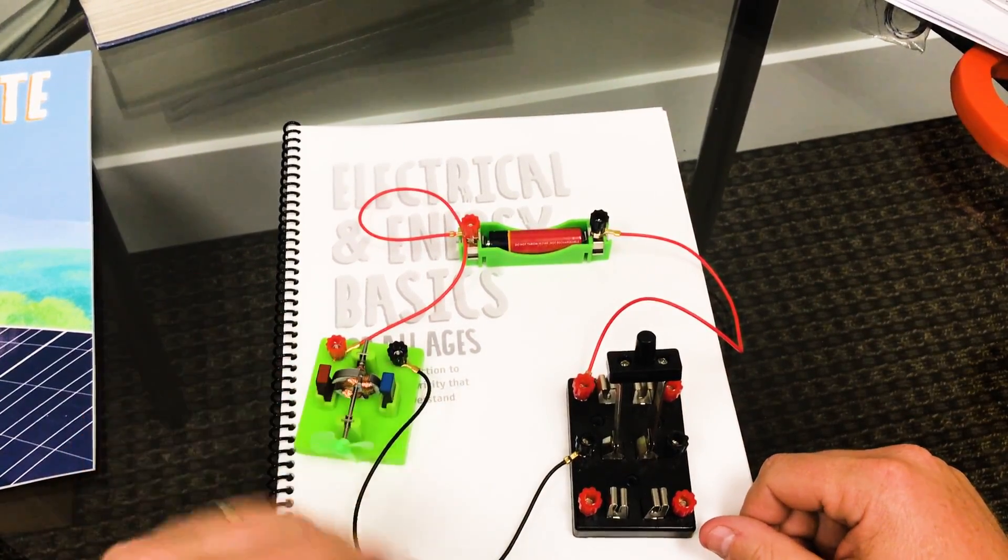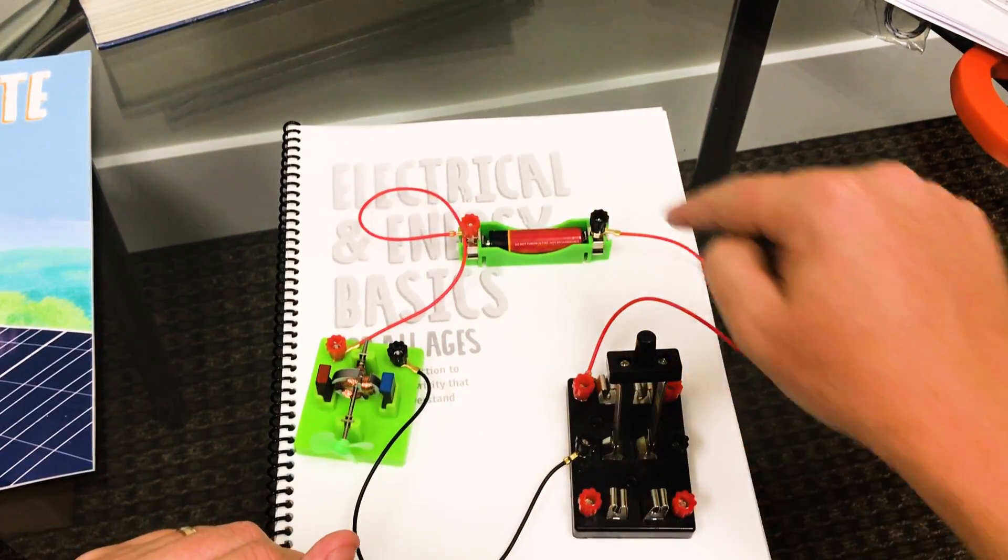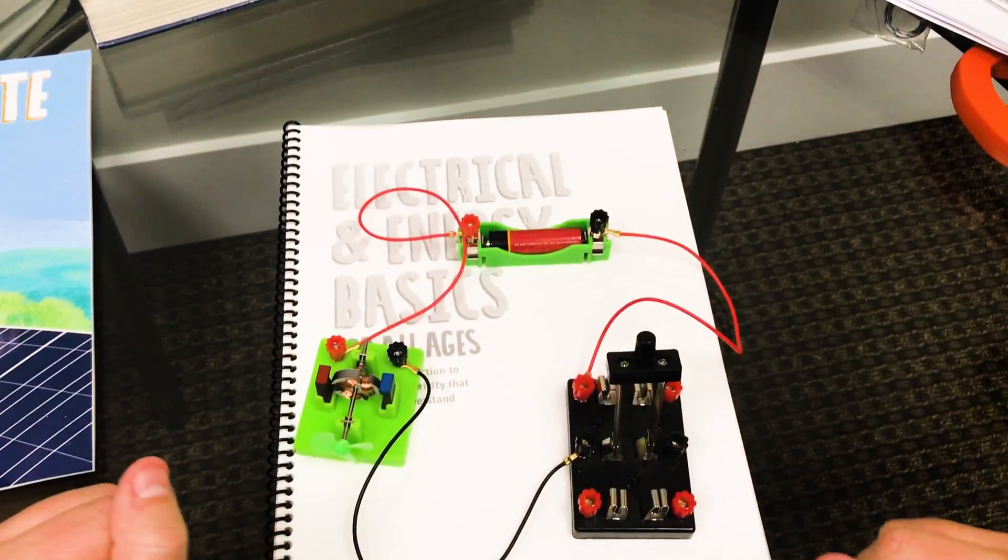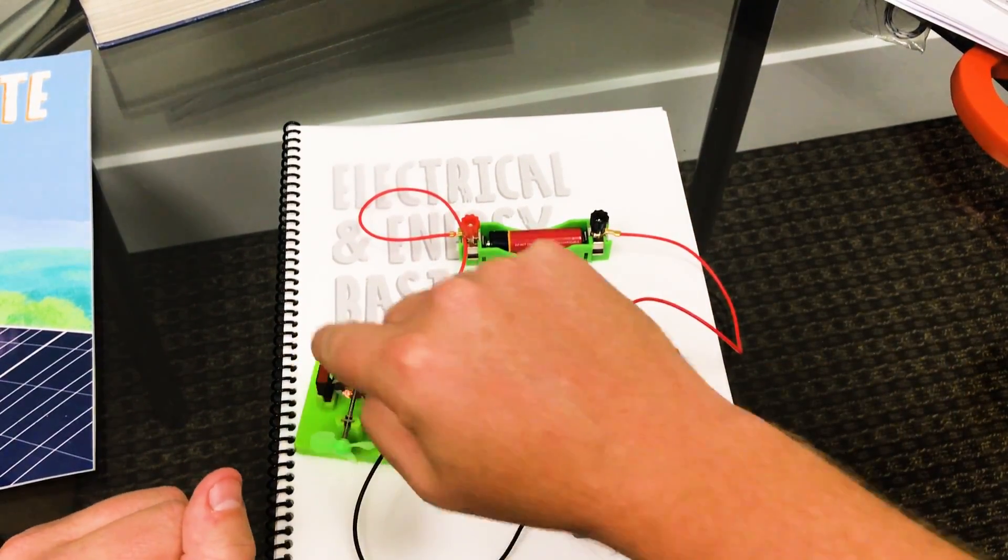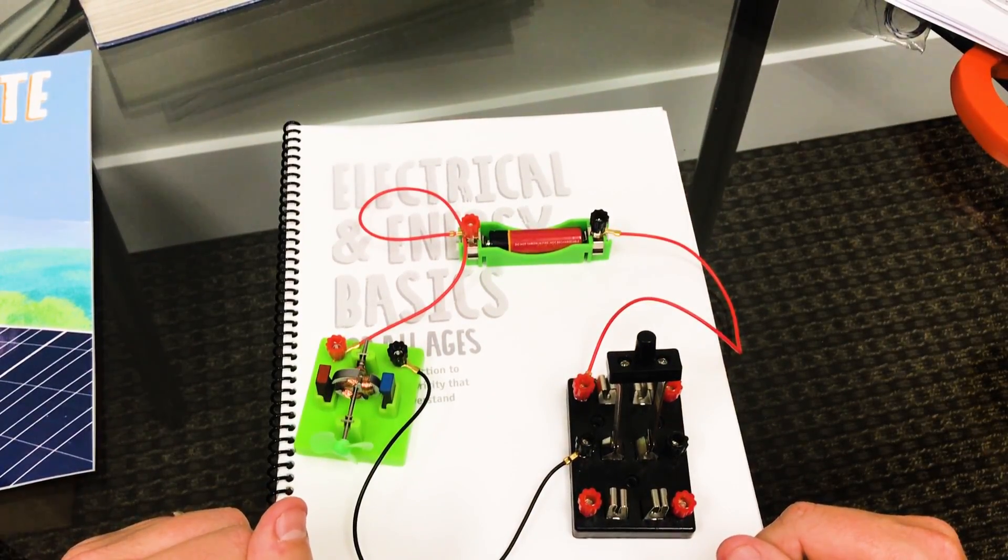whether you're working with 240 volts, 120 volts, 24 volts, 9 volts, no matter what you're working on. That's really what you're trying to do is create a circuit from one side to the other through a switch, and then through the load. In and out of the switch, in and out of the load, and then back to the power supply.